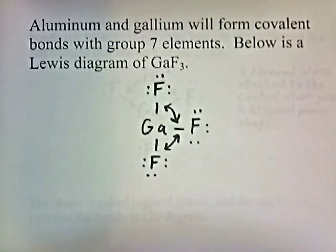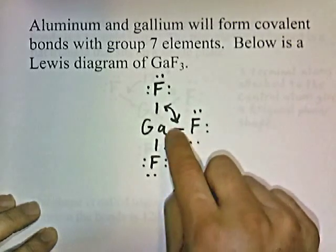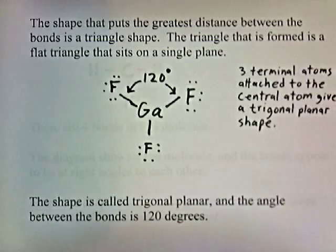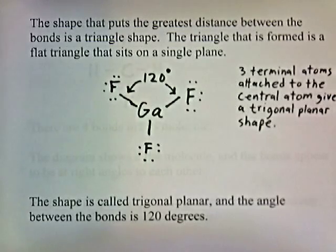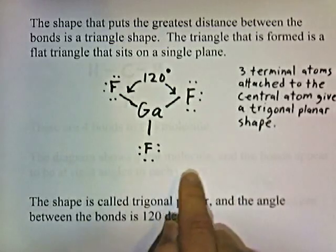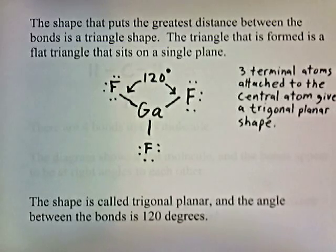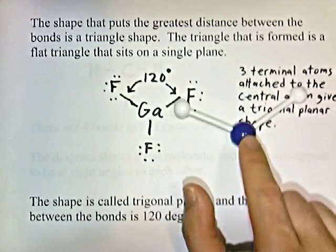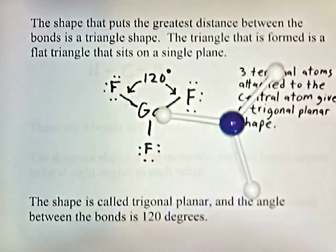Aluminum and gallium will form covalent bonds with group 7 elements. Below is a Lewis diagram of gallium trifluoride. This bond wants to get away from this bond — they push away from each other. The shape that puts the greatest distance between the bonds is a triangle shape. The triangle formed is a flat triangle that sits on a single plane. This shape is called trigonal planar, and the angle between the bonds is 120 degrees. Anytime you have three terminal atoms attached to a central atom, it gives a trigonal planar shape — a flat triangle with gallium in the center and fluorines attached to each side.